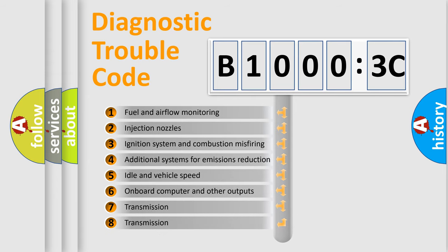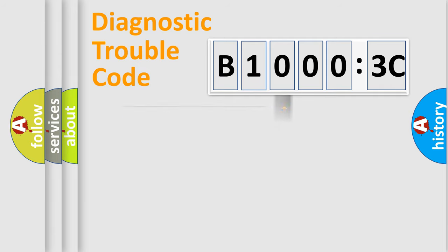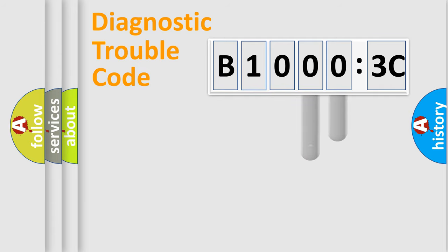The third character specifies a subset of errors. The distribution shown is valid only for the standardized DTC code. Only the last two characters define the specific fault of the group.